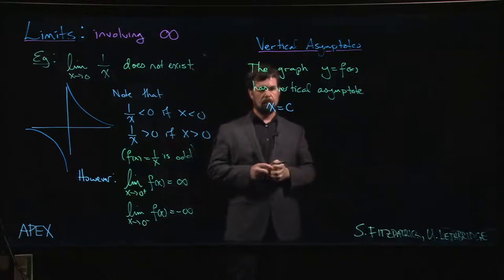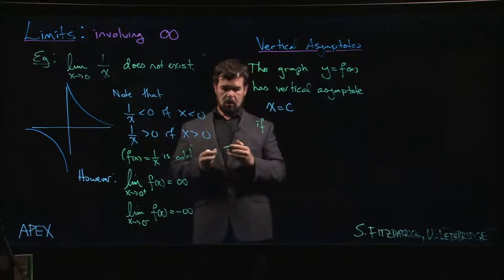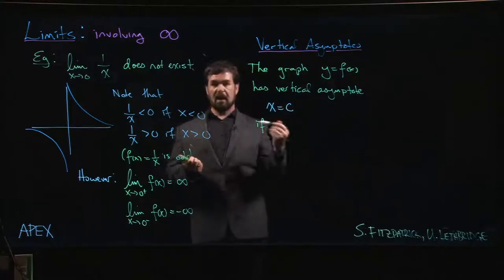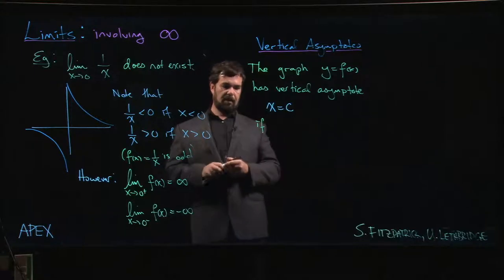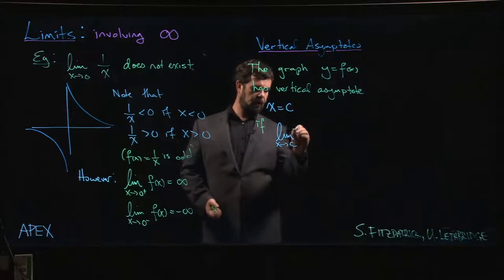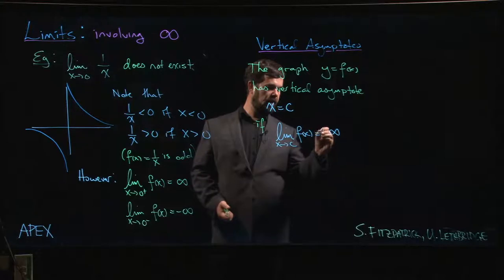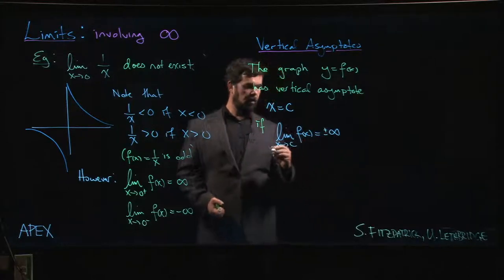It has a vertical asymptote if any limit at c happens to be infinite. So if the limit as x approaches c of f of x is plus infinity or minus infinity.